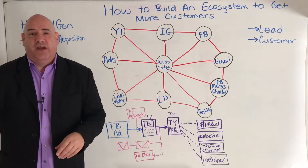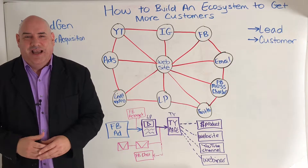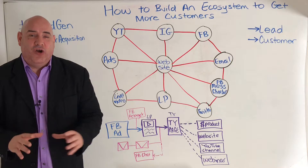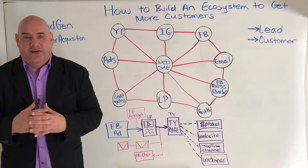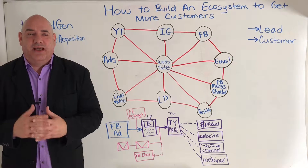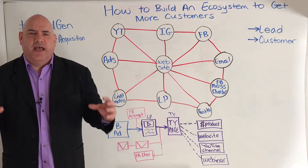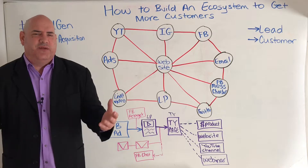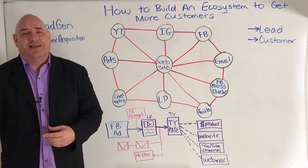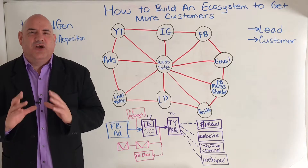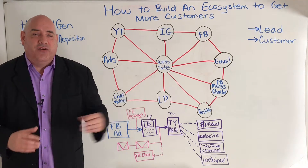Instagram over here, Facebook over here, but they're never really connecting and working with each other. That's the trick — you have to have your own ecosystem where all these platforms work together. They have to point to each other. You want to think about wherever the customer lands — whether it's your website, Facebook, or seeing your ad — what exactly are you doing with these potential customers once they interact with one of your platforms?